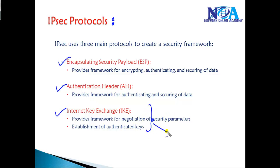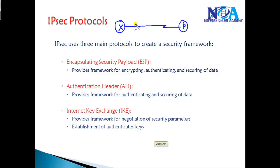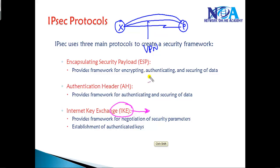The major difference between these three: IKE is going to provide you the framework for negotiating the security parameters. Let's say you have two routers and you want to build an IPSec VPN connection between them. The IKE protocol is responsible for providing a secure channel between these two locations — it's going to handle the secure channel establishment.